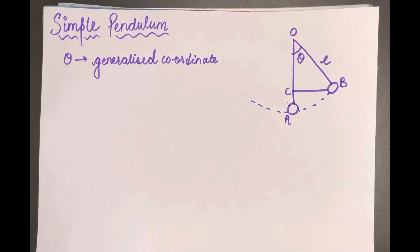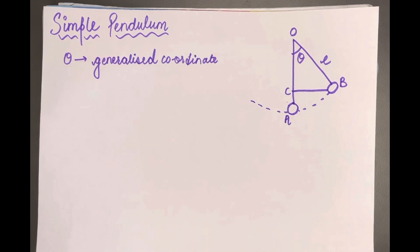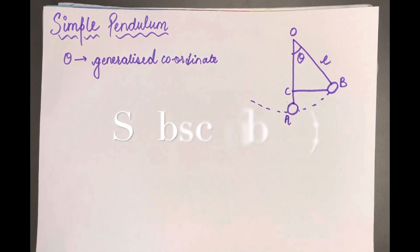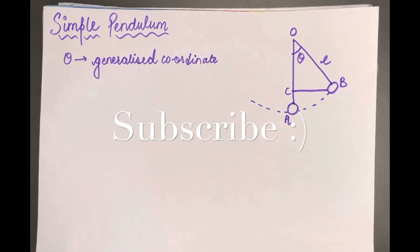Hello and welcome to my channel, The Blessed Physicist. In the previous video we did an example on the linear harmonic oscillator, and in this video we are going to take another example of the Lagrange equation of motion, which is the simple pendulum. Before we proceed, please subscribe to my channel and don't forget to press the bell icon.